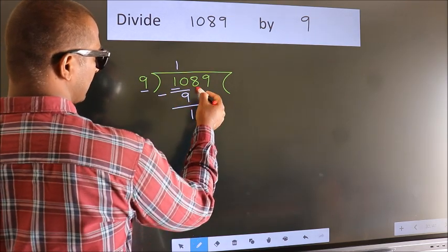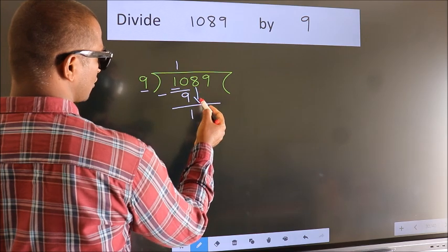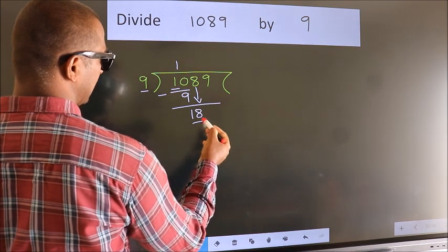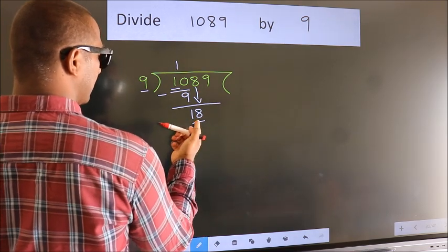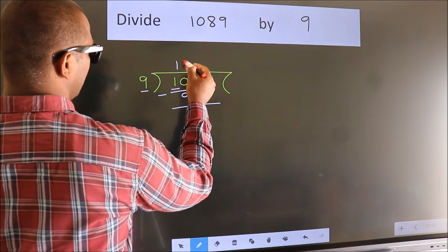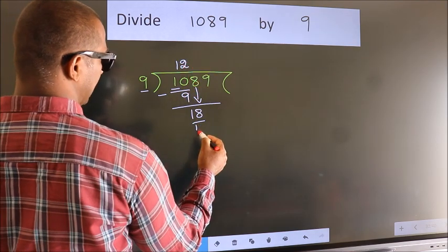After this, bring down the beside number. So 8 down. So 18. When do we get 18? In the 9 table, 9 twos 18.